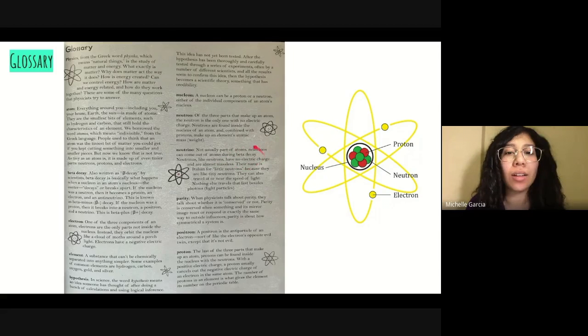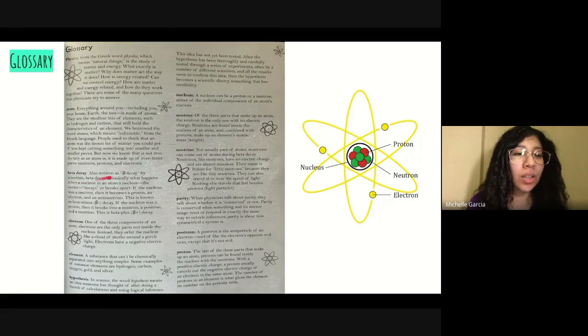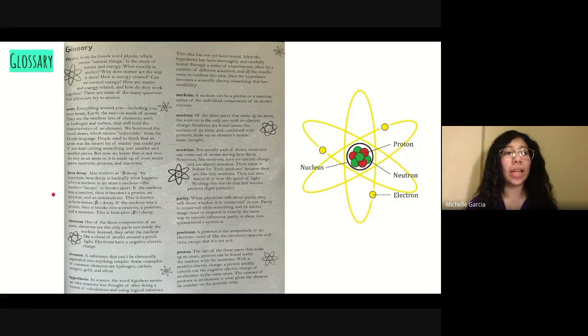Hmm, beta decay. What is that? Ah, here, beta decay. Also written as beta decay, so here is the Greek symbol for beta. Beta decay is basically what happens when a nucleon in an atom's nucleus, or the center, decays or breaks apart. If the nucleon was a neutron, then it becomes a proton, an electron, and an anti-neutrino. This is known as beta minus decay.